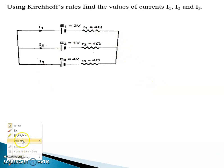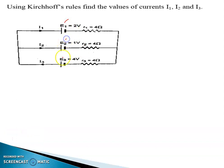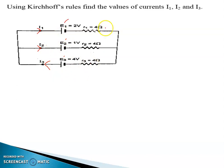See this network — we have three batteries E1, E2, and E3. The directions of currents are given: I1 is going in this direction, I2 also in this direction, and I3 is going in this direction. We have to find I1, I2, and I3. You can see three resistors of 4 ohm, 4 ohm, and 4 ohm connected towards the negative terminal of the battery.